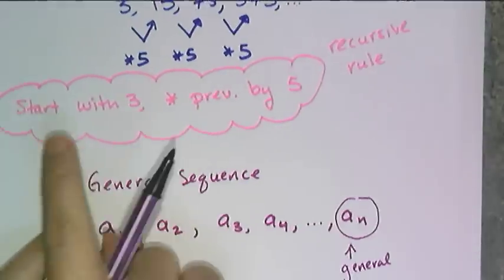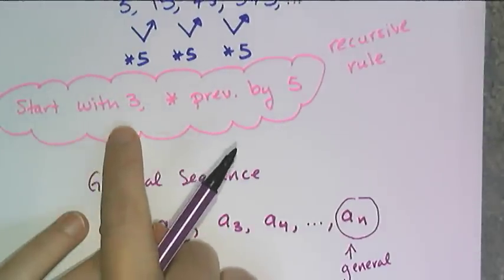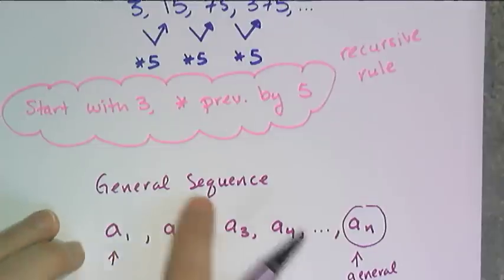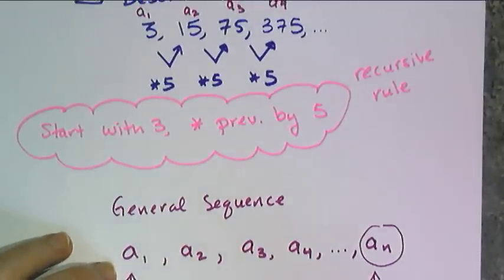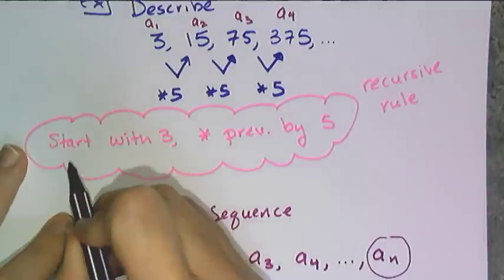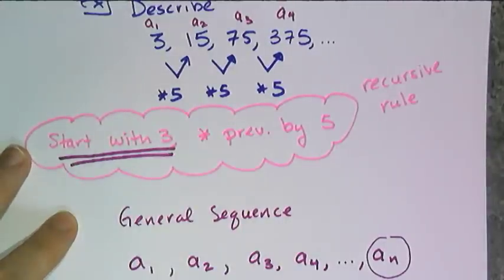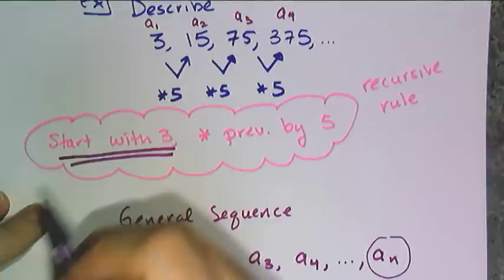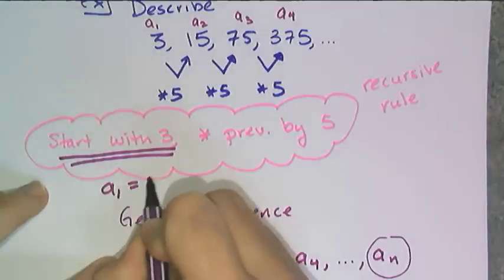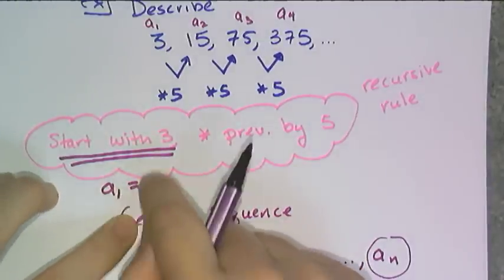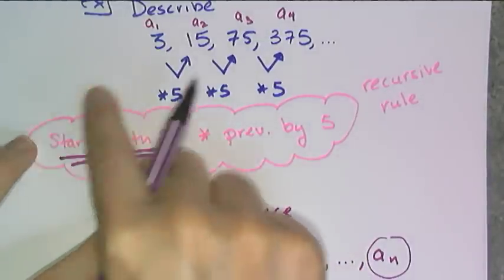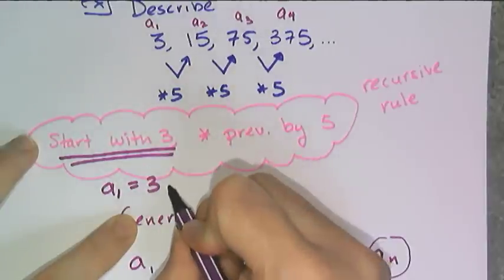Now if I want to convert this recursive sentence into the language and notation of sequences, I can. It's really quite easy. You have to remember that start with means the first term. So that means the first term a sub 1 has to equal 3. a sub 1 equals 3 is the sequence notation equivalence of the phrase start with 3.